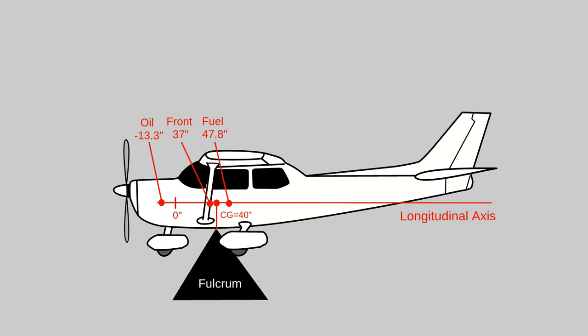Working back, the fuel is at 47.8 inches, the back seats at 73, the main baggage area at 95, and the smaller extended baggage area at 123.